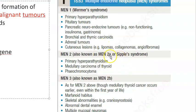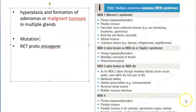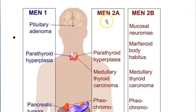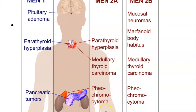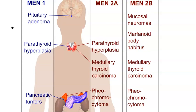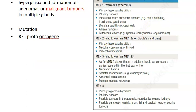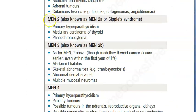Now let's look at MEN 2. MEN 2A is called Sipple's syndrome. Looking at the photo for reference: MEN 2A has parathyroid involvement - they left out the pituitary - plus thyroid and pheochromocytoma. Pheochromocytoma is of the adrenal gland. So MEN 2A, also called Sipple's syndrome, involves hyperparathyroidism, medullary carcinoma of the thyroid, and pheochromocytoma.